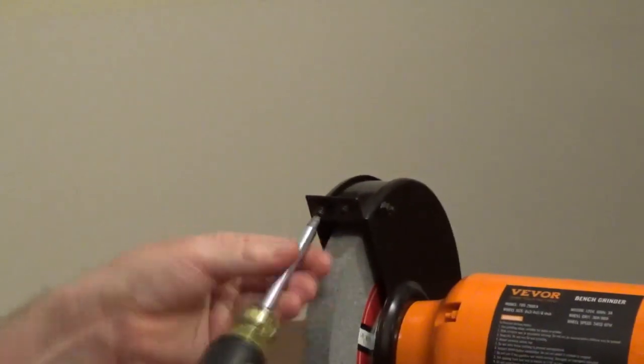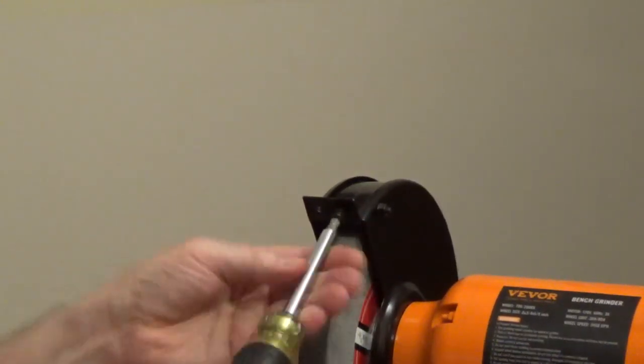Repeat on the other side. The spark arrester should be within a quarter inch of the wheel.